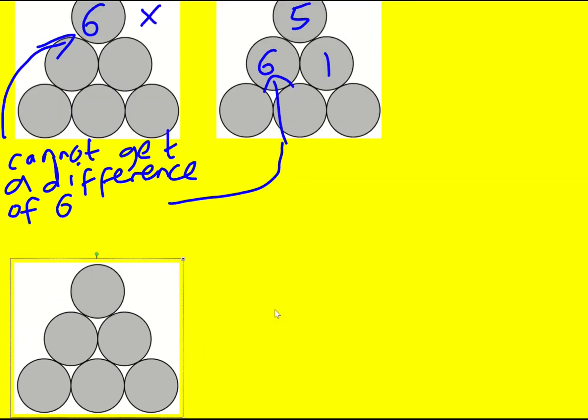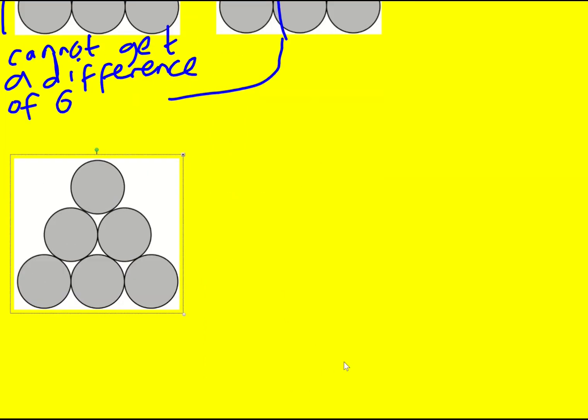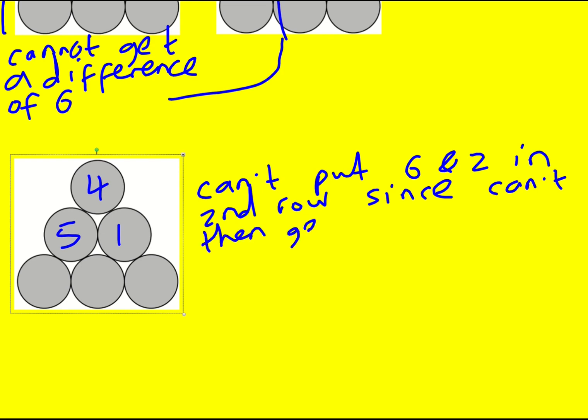Let's have a look at 4. So if we have 4, then I'm going to have to get 5 and 1. Okay, so we can't put 6 and 2 in the second row since we can't then get a difference of 6.